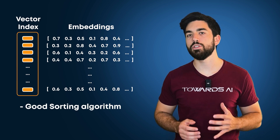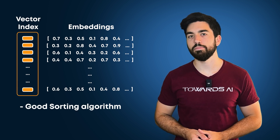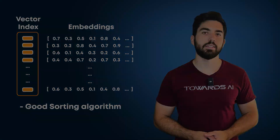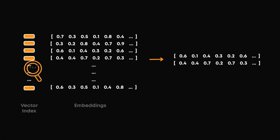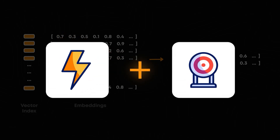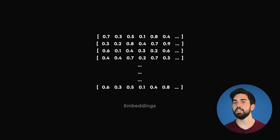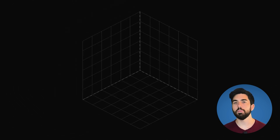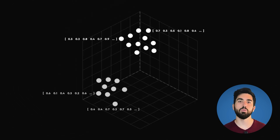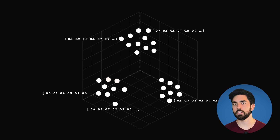A vector index is basically like a good sorting algorithm. It's a data structure that searches and retrieves a vector embedding from a large dataset of objects. It needs to be both fast and accurate. An embedding is when an object is converted into a list of numbers, and each similar embedding is placed close to one another in the vector space.